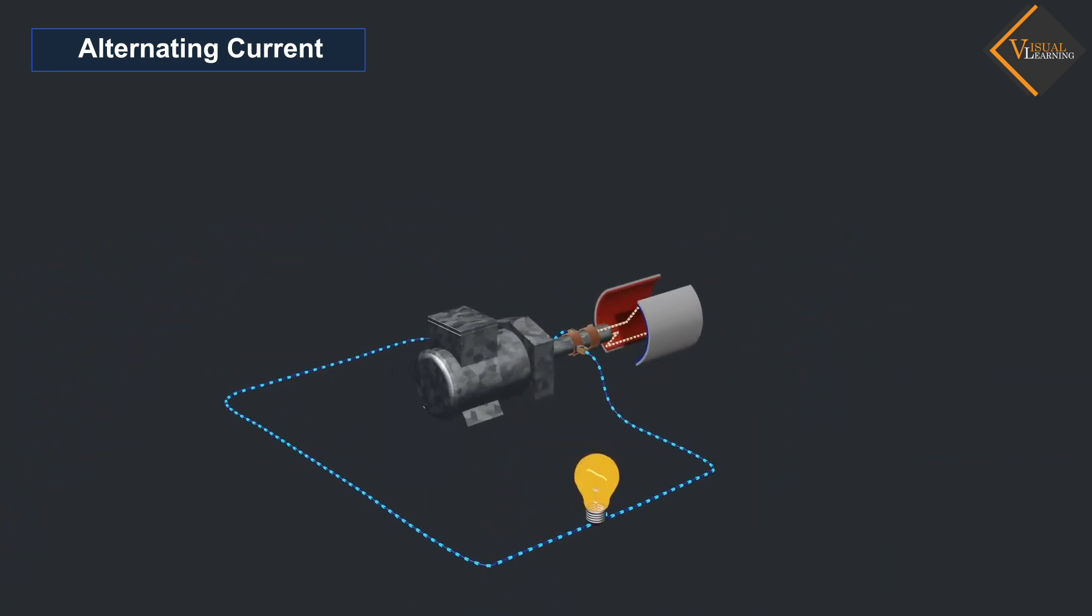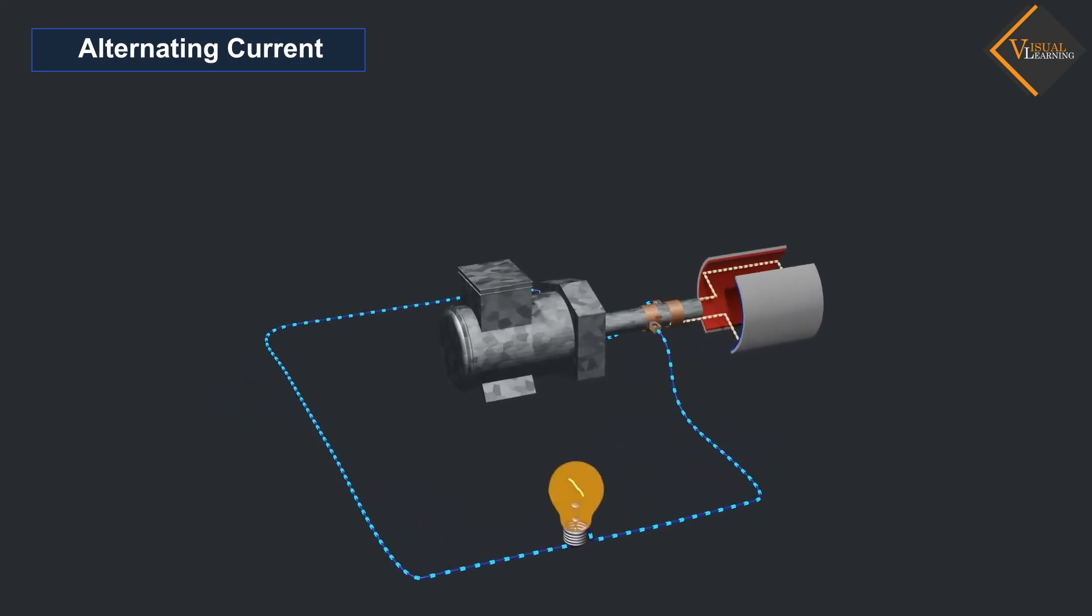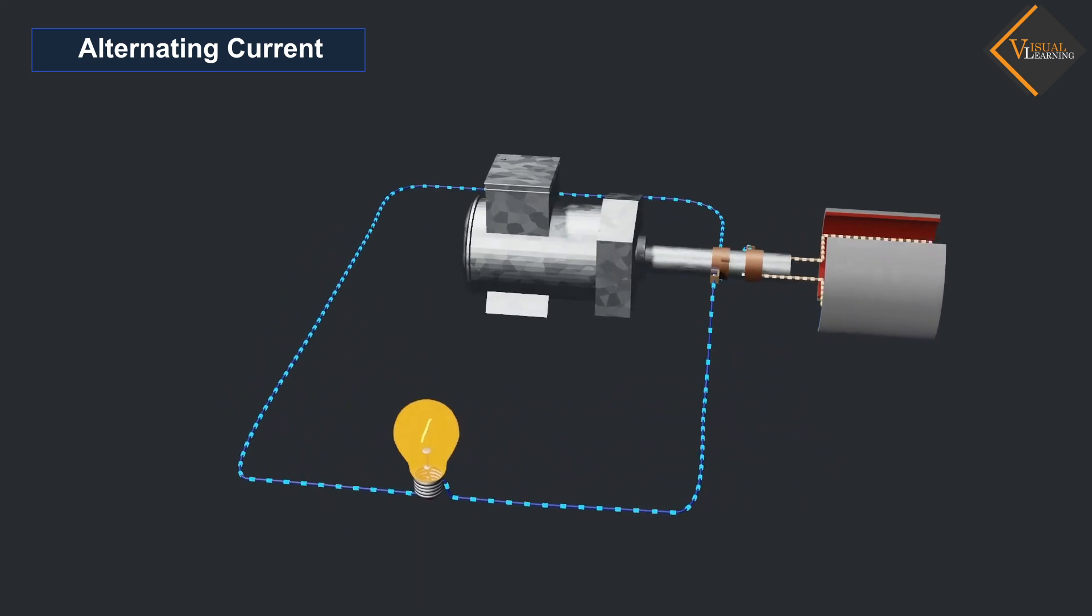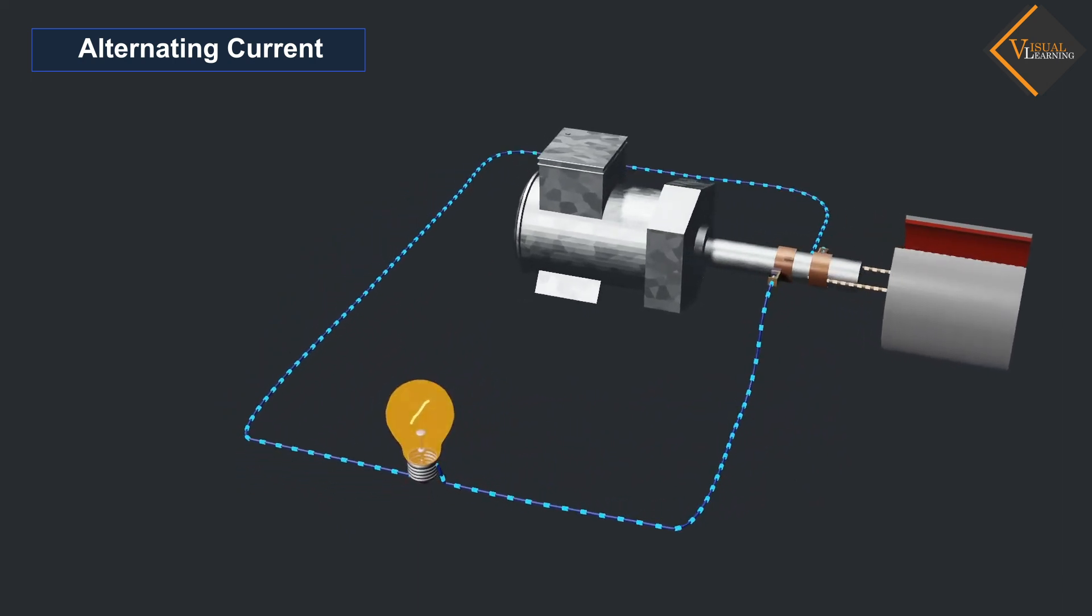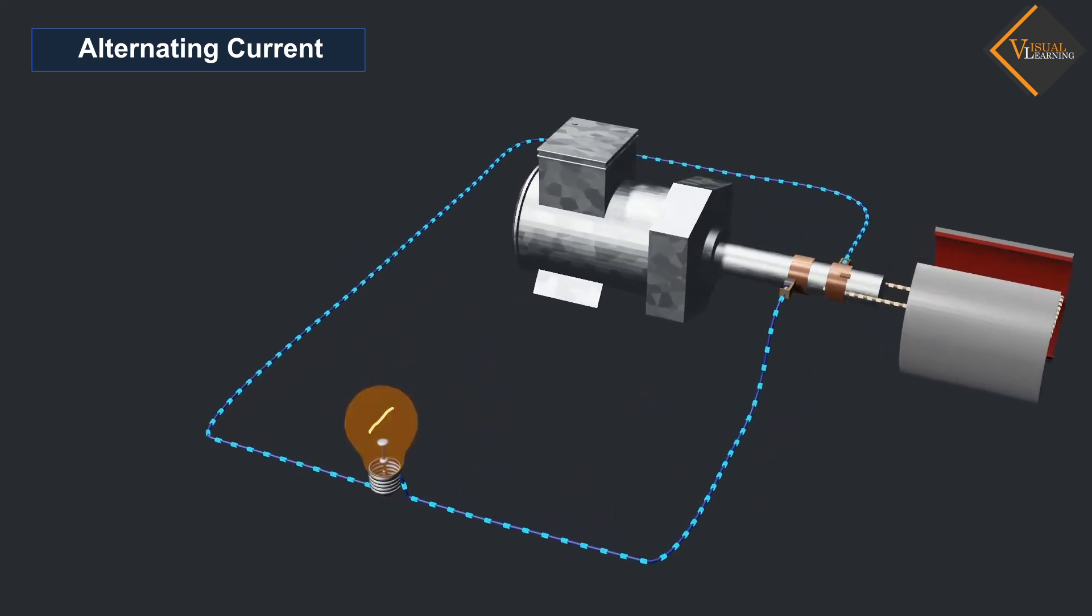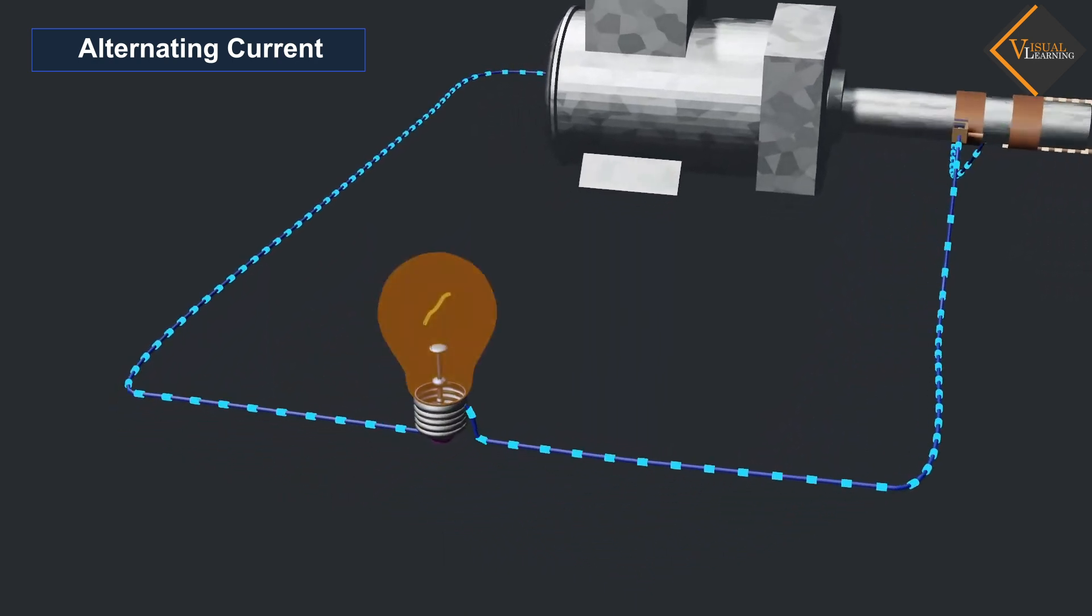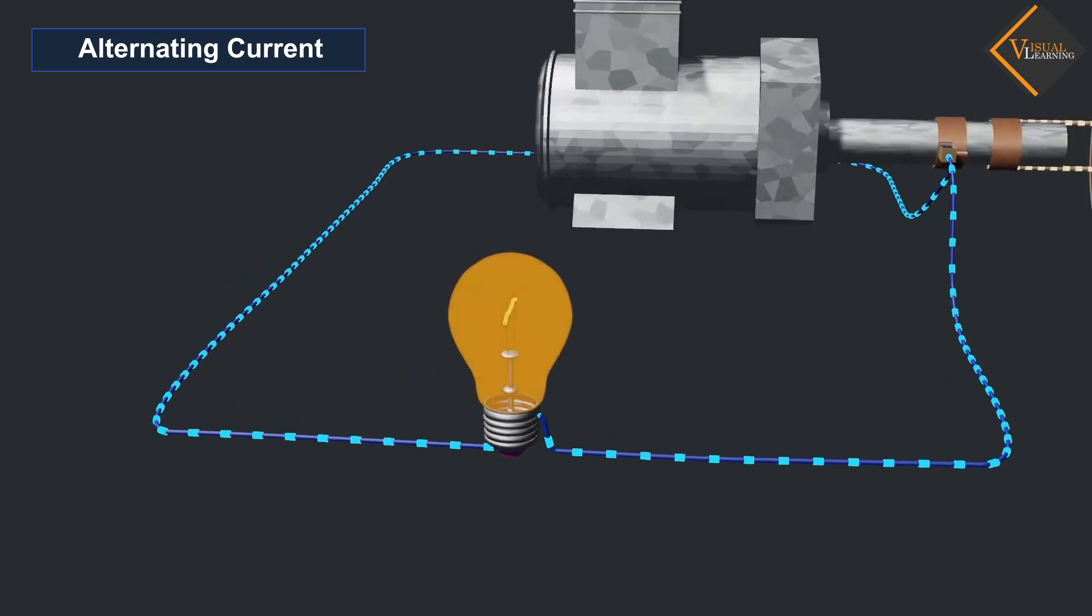Let's consider an AC generator connected to a bulb through a wire. We observe that the direction of current in the wire continuously changes, but the bulb continues to glow. Practically, we could not see this happening because this process is occurring very rapidly.